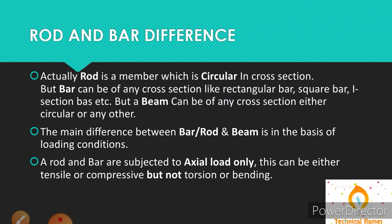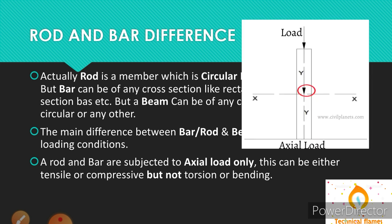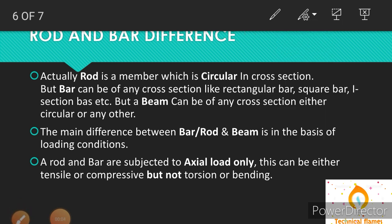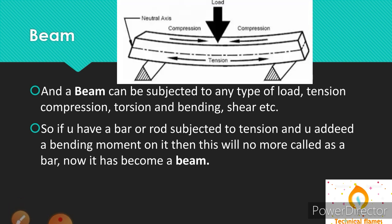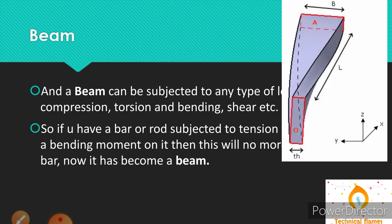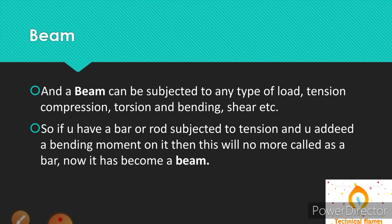But if we're talking about a beam, a beam can be any cross-section, either circular or any other. So what's the main difference between bar, rod and beam? Basically, it's divided based on the type of loading. Rod and bar are subjected to axial load only — this can be either tensile or compressive, but not torsion or bending. A beam can be subjected to any type of load: tension, compression, torsion and bending. So if you have a bar or rod subjected to tension and you add a bending moment on it, then it will no more act as a bar — now it becomes a beam.